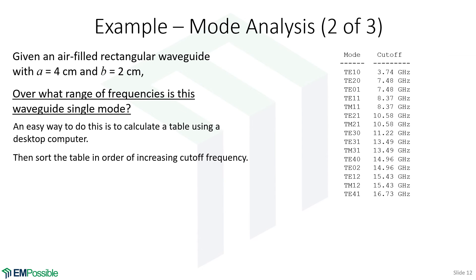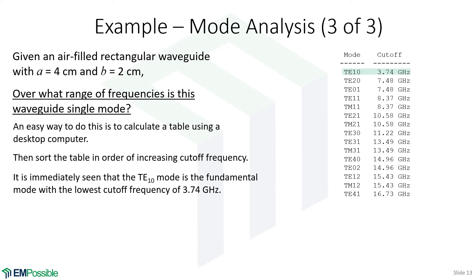Sorting the cutoff frequencies immediately shows the TE10 mode as the fundamental mode, followed by the TE20 mode. TM modes don't appear until around the fourth mode or so. The TE10 has a cutoff frequency of 3.74 gigahertz. Since the question asks for the single-mode range, we find the next mode's cutoff frequency on the table. This wave guide is single-moded from 3.74 gigahertz up to 7.48 gigahertz — the range where it should be operated as a single-mode guide.